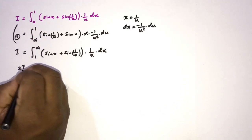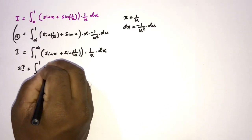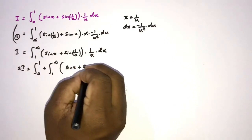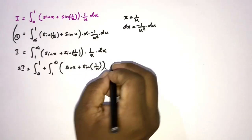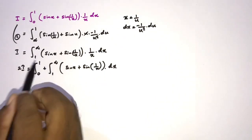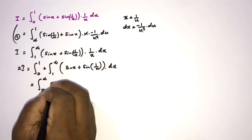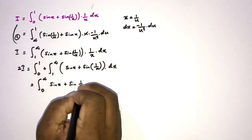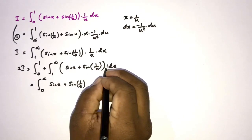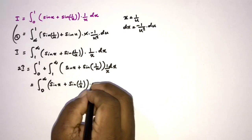We take the sum of the two integrals: 2I equals the original integral from 0 to 1 plus the transformed integral from 1 to infinity, both with the same integrand sin(x) + sin(1/x) times (1/x) dx. Combining the ranges gives the integral from 0 to infinity of sin(x) + sin(1/x) times (1/x) dx.